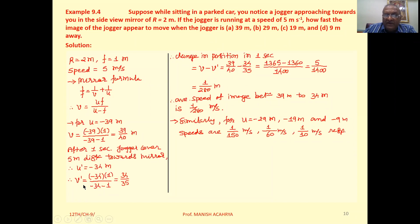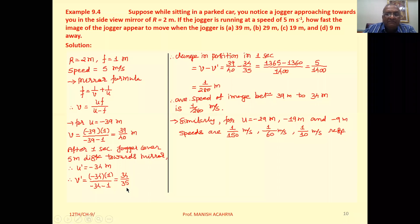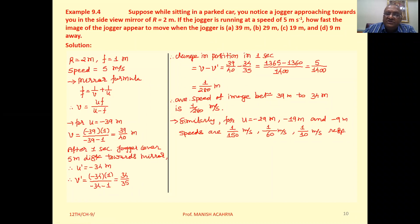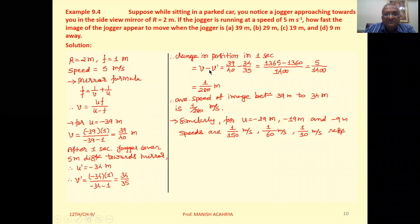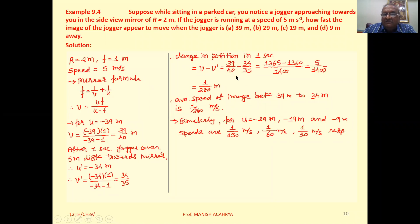So v dash equal to minus 34 into 1 upon minus 34 minus 1. That is 34 upon 35. So in 1 second, the change in position of the image is v minus v dash, 39 by 40 minus 34 by 35.